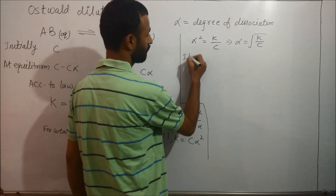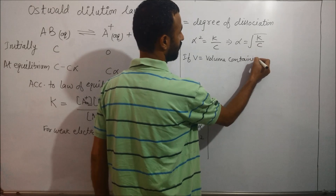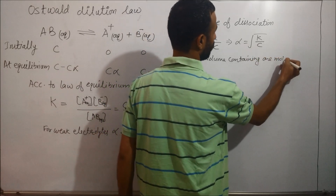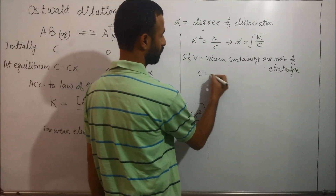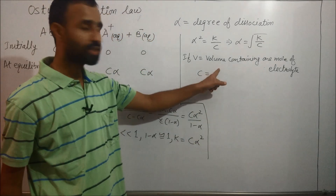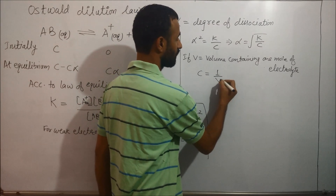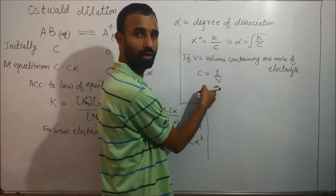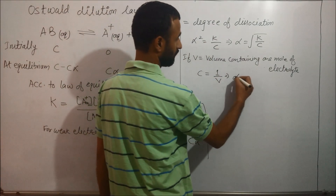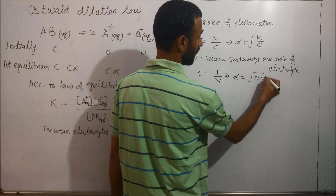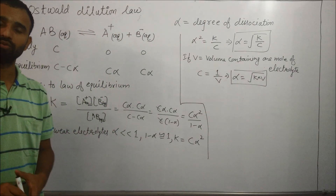If V is the volume containing 1 mole of electrolyte, then C equals 1 divided by V. Substituting, this implies alpha equals the square root of K times V. This is Ostwald's Dilution Law.